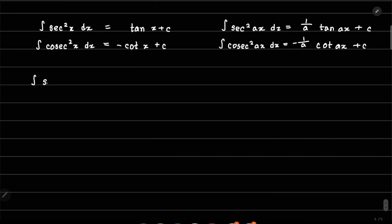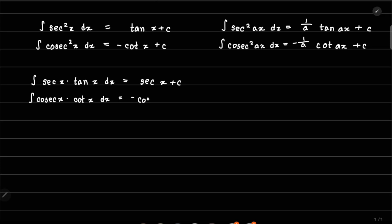For the final two trigonometric pairs: the integral of sec x times tan x dx gives sec x plus C. The other one is the integral of cosec x times cot x dx, which gives minus cosec x plus C.